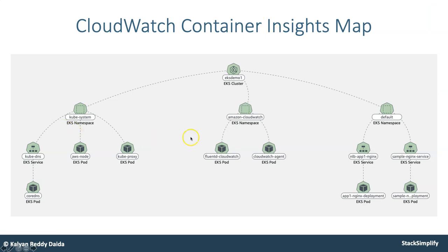As a developer, you will see container map, container resources, performance dashboards, log groups, log insights, and alarms. You will implement alarms, understand log insights, and create dashboards from log insights. This is a quick view of the Container Insights map: in the EKS demo cluster, in the Amazon CloudWatch namespace you can see Fluentd and CloudWatch agent pod running; in the kube-system namespace you can see kube-dns, AWS node, and kube-proxy pods; and in the default namespace your deployed applications such as sample nginx service and deployment pods are running.